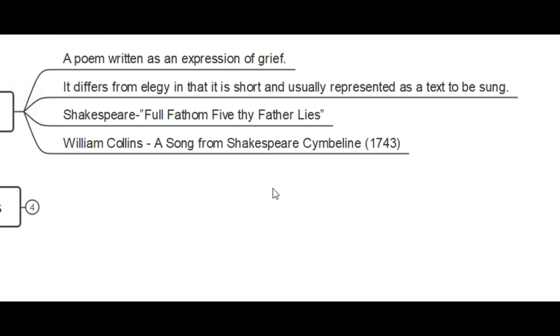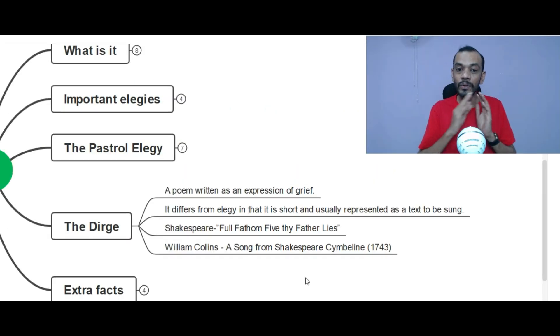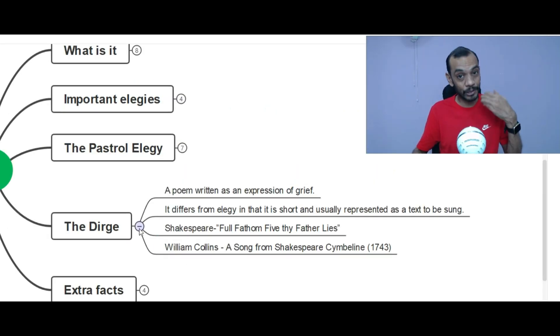And what is a dirge? Dirge is something very close to an elegy in the sense that it is also a poem written for expressing grief. But here, it is short and it is written to be sung in public. And we have two examples of dirge. First one, Shakespeare's Full Fathom Five, Thy Father Lies. And second one, William Collins, A Song from Shakespeare's Cymbeline, written in 1743. So, that is dirge. Dirge is short and it is to be sung in public.